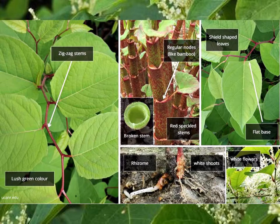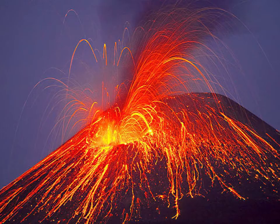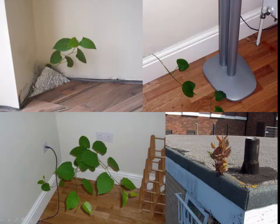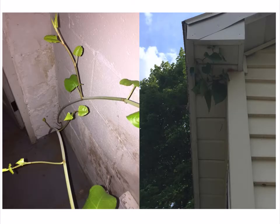Its leaves are flat at the base and pointed at the tips. Tiny white flowers form in a spike. Japanese knotweed is the first to come up after a volcano, so it has no problem growing through concrete, road right-of-ways, or even housing foundations. There are sites in Michigan where knotweed was growing through somebody's house.